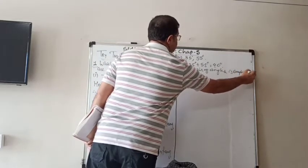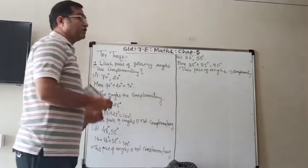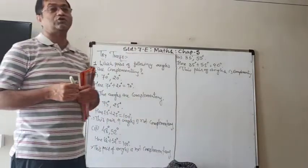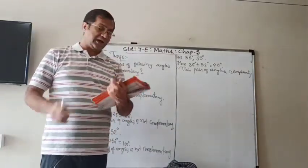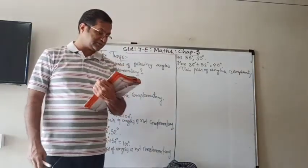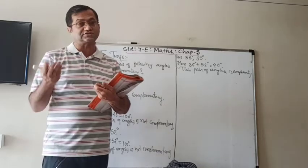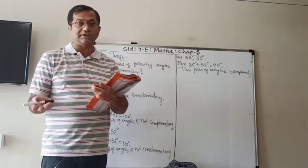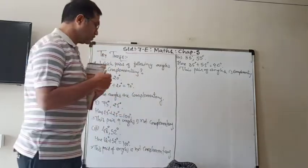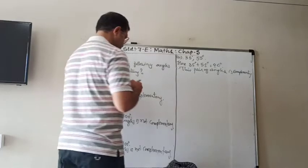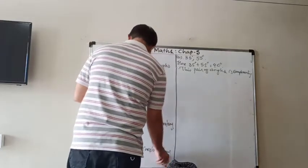So if you want to check if they are complementary or not, what we have to do is just add the measures. If it is 90 degrees, they are complementary; otherwise they are not.